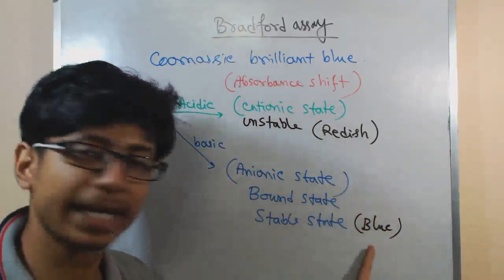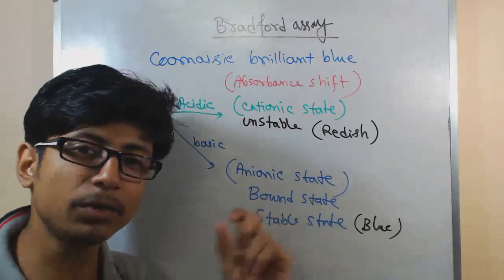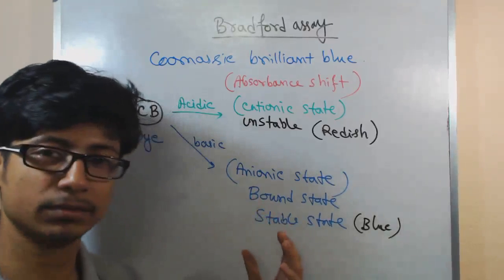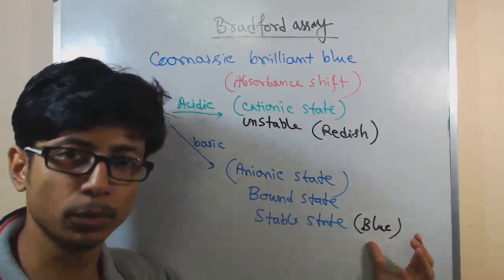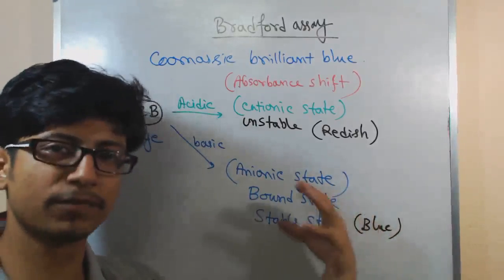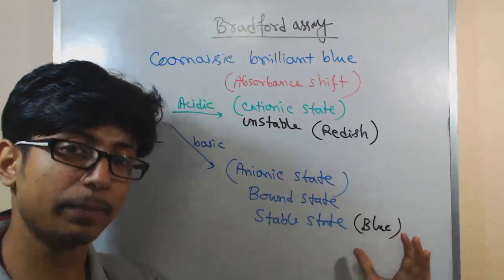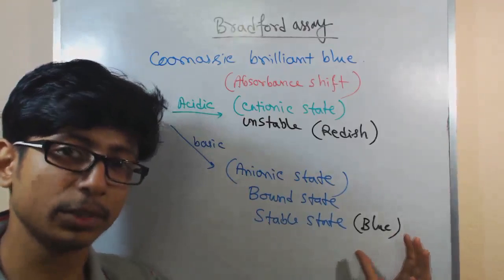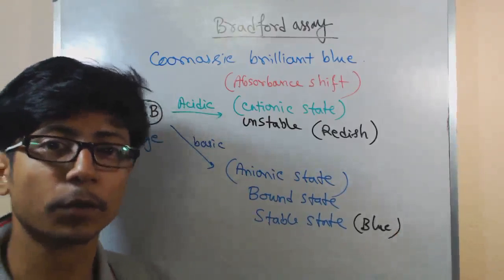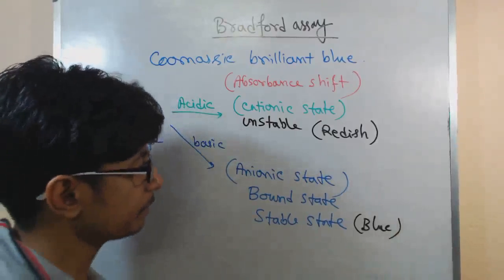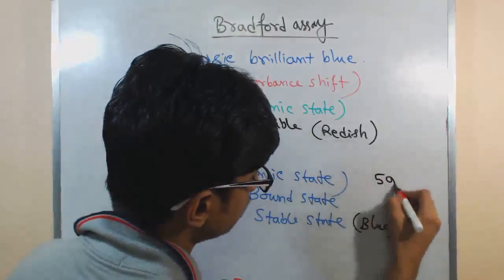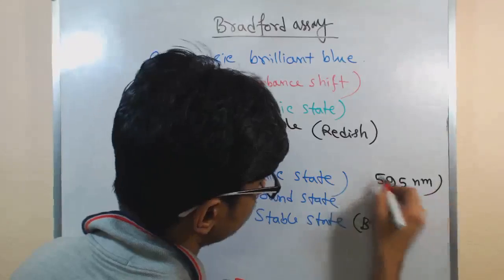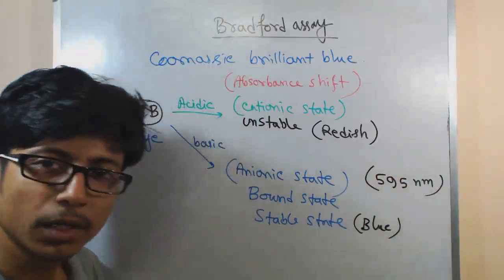We can detect the amount of compound present that will turn them to the blue, that is the blue compound, the blue complex for this dye present in a particular time using colorimetric assay, using spectrophotometer by observing them in 595 nanometer of wavelength.